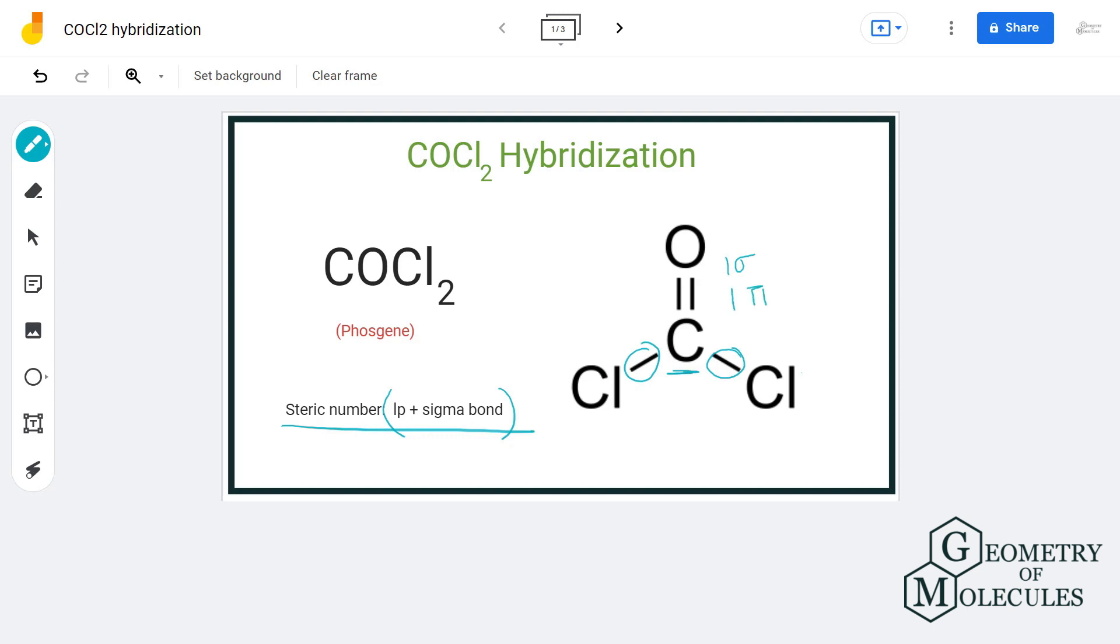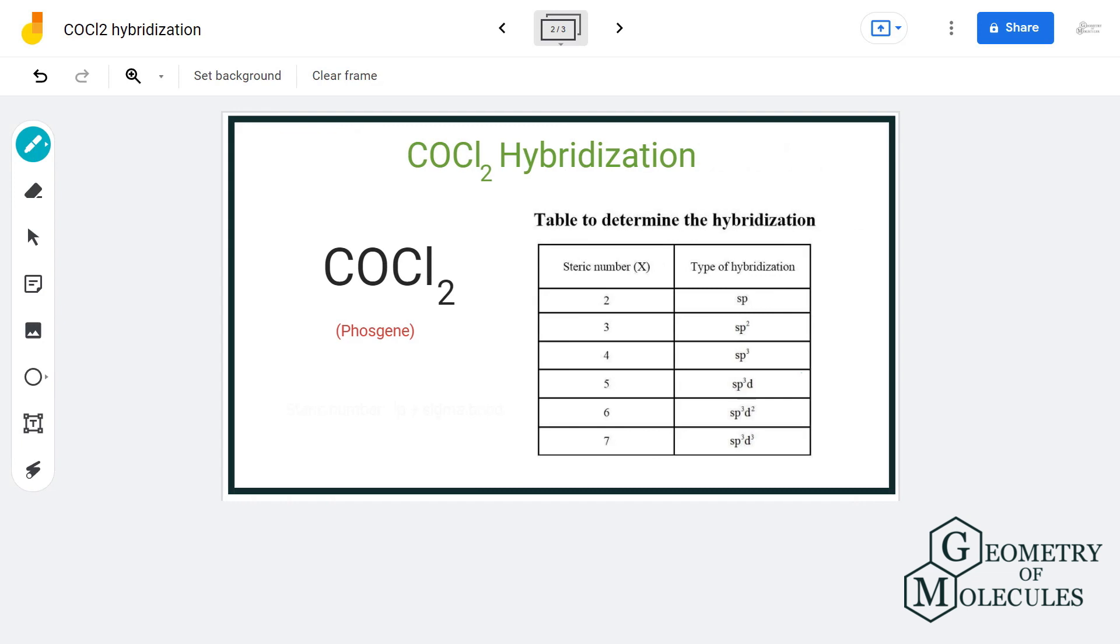And carbon has no lone pairs of electrons attached on it. Leaving aside the pi bonds, we have three sigma bonds plus zero lone pairs that equals to the steric number of three. Now that corresponds to sp2 hybridization.